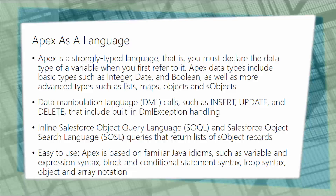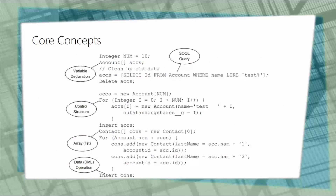Apex is fairly straightforward, especially if you're a basic programmer or understand Java or another object-oriented language. It's primarily based on familiar Java idioms such as variable declarations, loops, expression syntax, blocks, conditional statements, and arrays. Here's a piece of code showing variable declaration, SOQL queries, control structures, array lists, and DML operations — the core concepts within the Apex programming language.